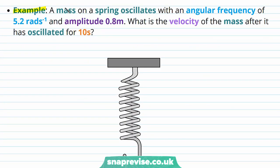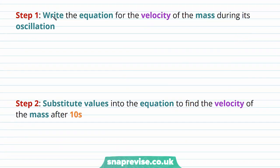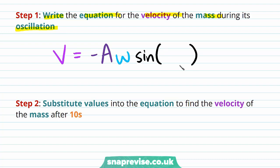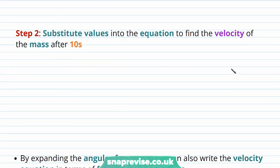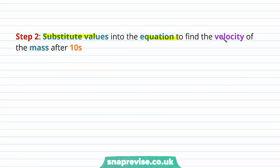Let's do an example. A mass on a spring oscillates with an angular frequency of 5.2 radians per second and amplitude 0.8 meters. What is the velocity of the mass after it has oscillated for 10 seconds? Step one is to write the equation for the velocity of the mass during its oscillation.